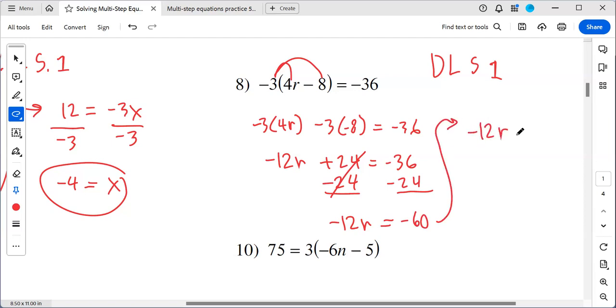So I got negative 12 R equals to negative 60. Just bring up the same thing. And then from here, if it's multiplied by R, we got to do the inverse. We divide it. R equals to five.